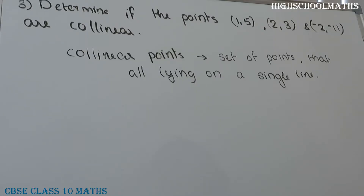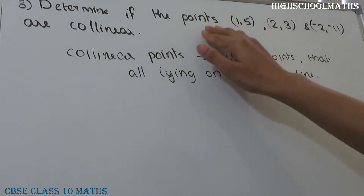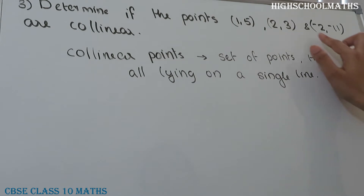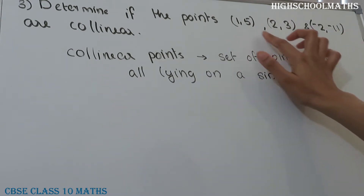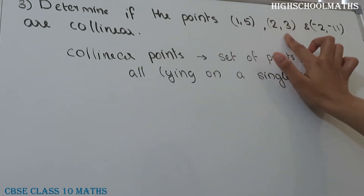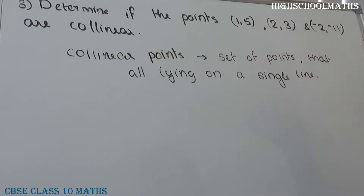Exercise 7.1, question number 3: Determine if the points (1,5), (2,3), and (-2,-11) are collinear. We have 3 points with coordinates (1,5), (2,3), (-2,-11). It is called collinear points.